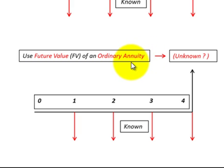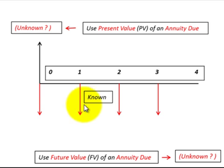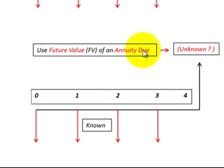Here we have an unknown present value and known equal payments — four of them — but they're at the beginning of the period. In this case we'd use the present value of an annuity due. We use an annuity due when the payments are at the beginning of the period. In the last one, we have an unknown future value and known payments also at the beginning of the period, so we'd use the future value of an annuity due.